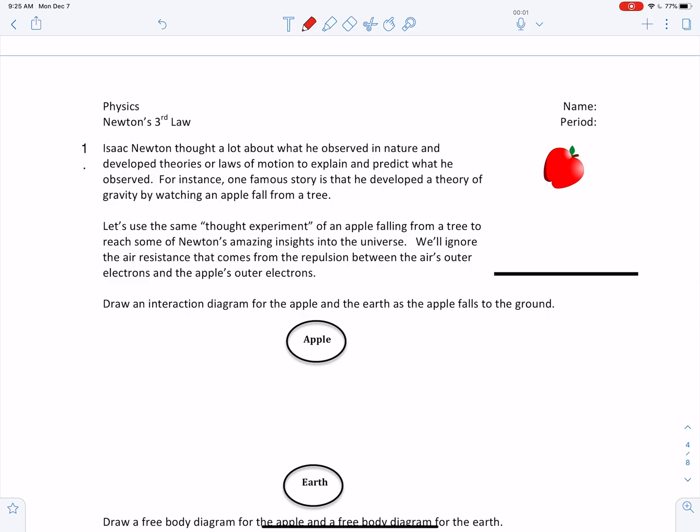Isaac Newton thought a lot about what he observed in nature and developed theories or laws of motion to explain and predict what he observed. For instance, one famous story is that he developed a theory of gravity by watching an apple fall from a tree, right? So here's that apple falling down. Let's use the same thought experiment of an apple falling from a tree to reach some of Newton's amazing insights into the universe. We'll ignore the air resistance that comes from the repulsion between the air's outer electrons and the apple's outer electrons.